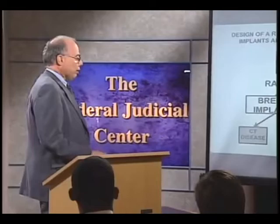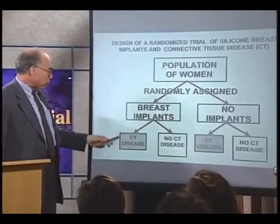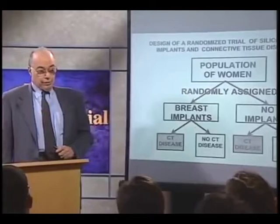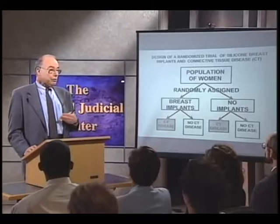Let's turn to the issue of breast implants and connective tissue disease, which has received great attention. If we wanted to carry out a randomized trial of breast implants, we would identify a population of women who would be randomly assigned to receive breast implants or not receive implants, and then both groups would be followed to determine what percent of each group develops connective tissue disease. Clearly, this diagram represents a hypothetical, because we could never carry out such a study. We would never get women to cooperate, and we could not do it for ethical reasons. A randomized trial can be carried out only when we are looking at a potentially beneficial intervention.